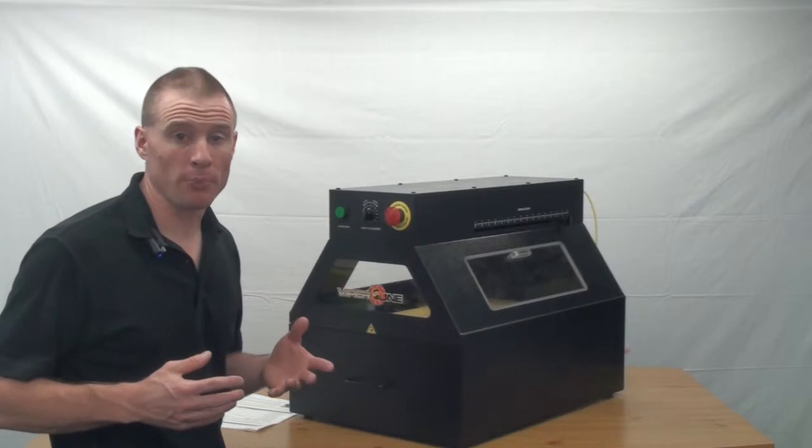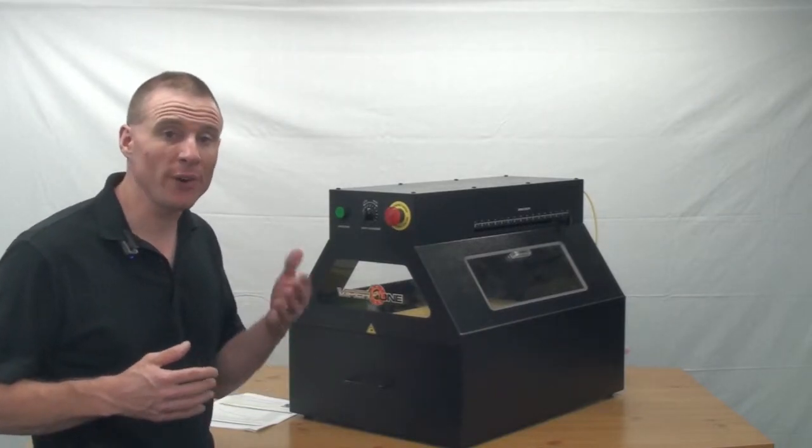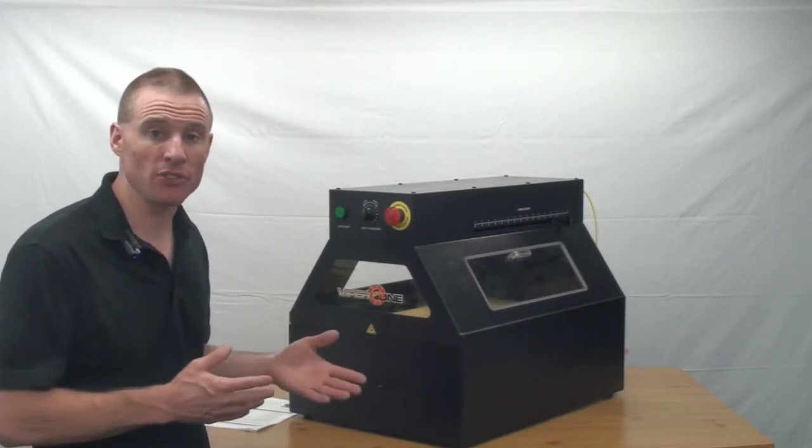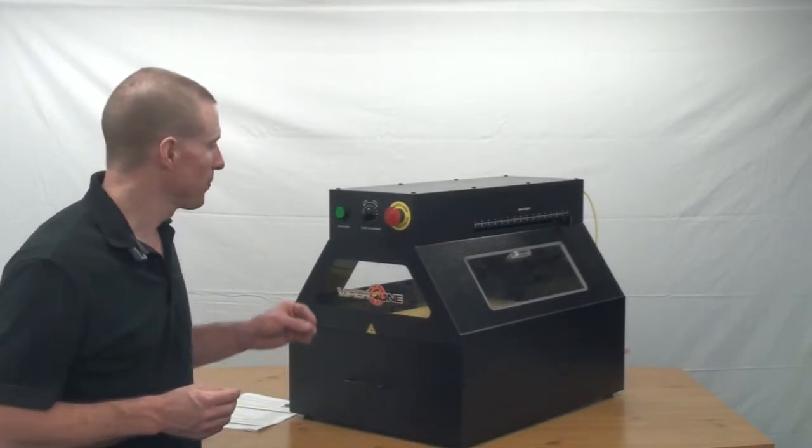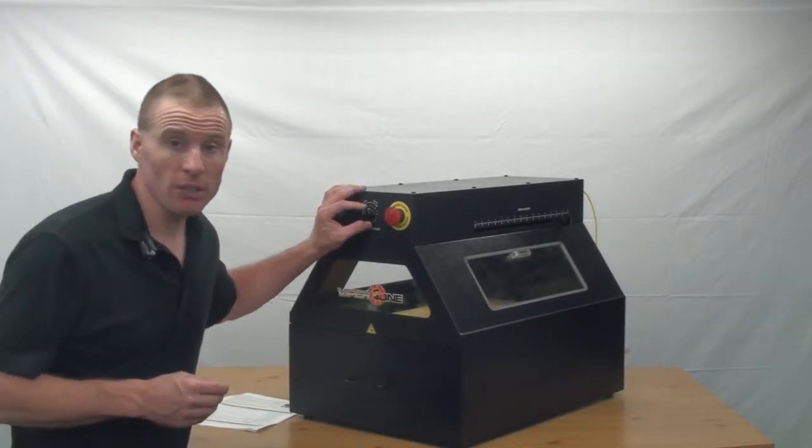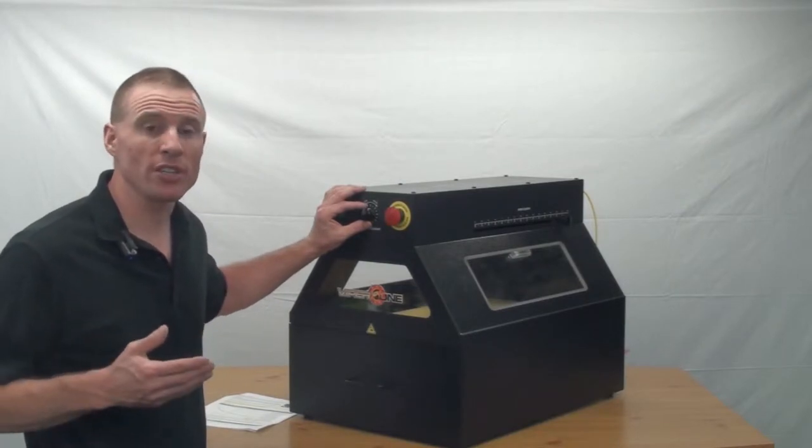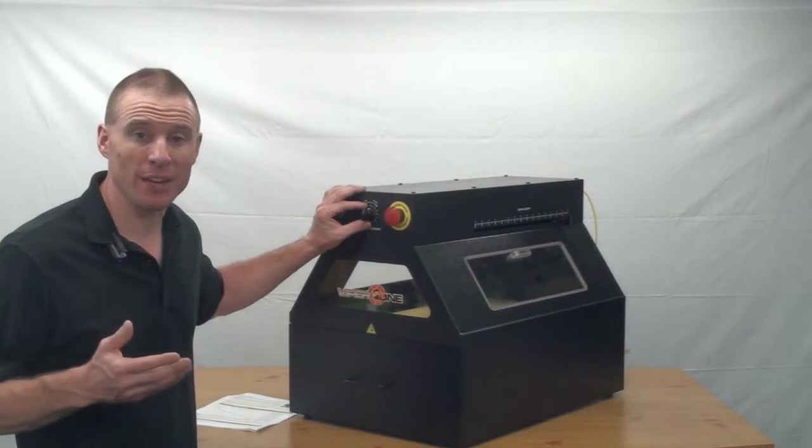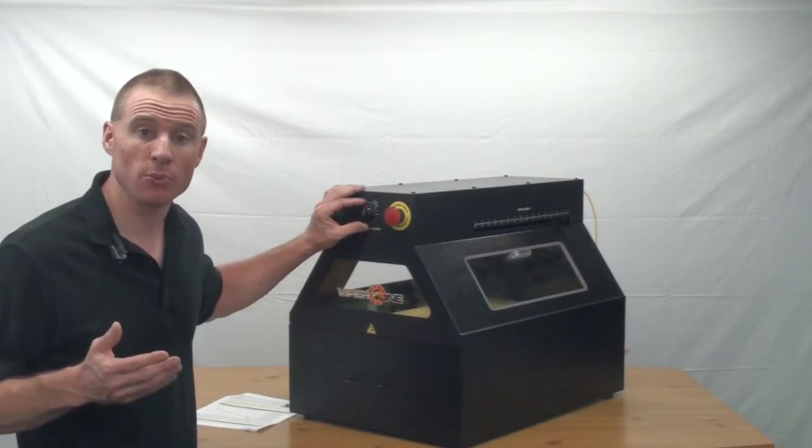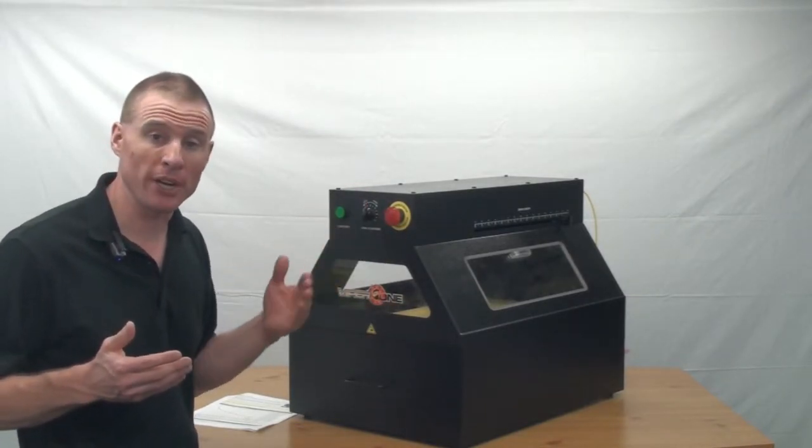To adjust your Viper 1 pre-treatment machine and vary the amount of fluid that's laid down onto your garment, you will use the spray adjustment knob. That is the center knob right here, and its whole function is to determine how much air is let into the air cylinder and how fast, which will then result in how fast your spray head moves.